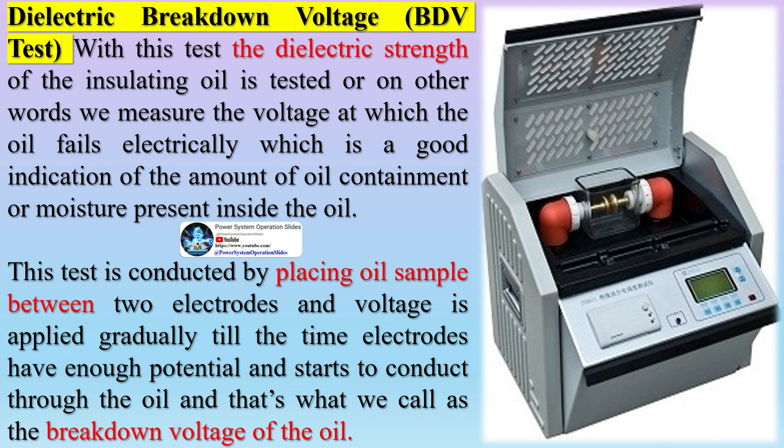Dielectric Breakdown Voltage (BDV) test: with this test, the dielectric strength of the insulating oil is tested — in other words, we measure the voltage at which the oil fails electrically, which is a good indication of the amount of contamination or moisture present in the oil. The test is conducted by placing the oil sample between two electrodes and gradually applying voltage until the electrodes conduct through the oil, which is called the breakdown voltage.